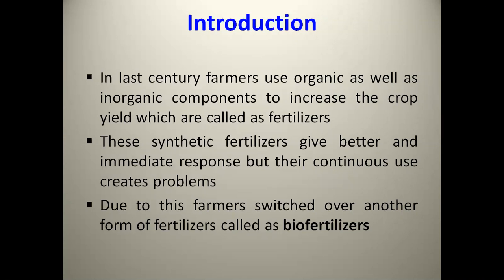Indian soils are poor in organic matter and plant nutrients. Hence, it is necessary to develop a technology to improve soil fertility to obtain higher yield. The organic manure supplies nitrogen, potassium and phosphorus in less amounts, while the synthetic fertilizers supply them in concentrated form. The synthetic fertilizers give better and immediate response in the form of increased yield, but their continuous use develops various problems or hazardous effects.